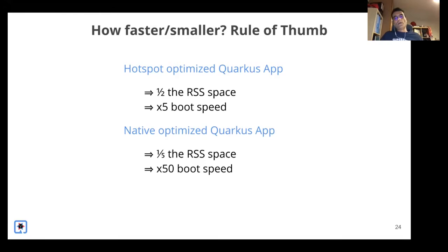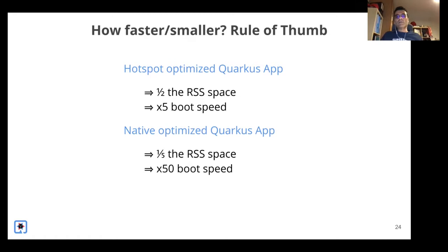Why do that? There are very good performance reasons. If you take a standard microservice normally written in Spring Boot and you Quarkify it — move it over to Quarkus — memory consumption will fall to about half. Boot speed will most likely increase by around five times. If you go the extra step and compile to native, memory size falls to about a fifth of the original and boot time becomes maybe 50 times faster. Those are significant savings in a cloud deployment that translate directly to money — you need less space to run the equivalent processing.